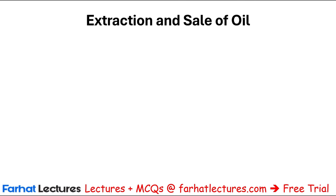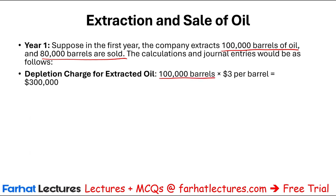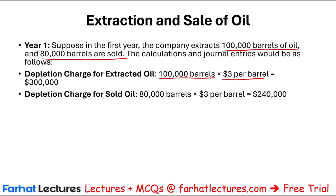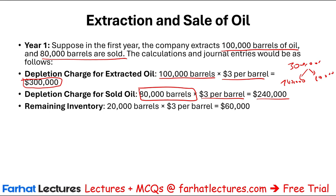In year one, we extracted 100,000 barrels of oil, of which 80,000 were sold. The total depletion on extracted oil is 100,000 × $3 = $300,000. The amount sold is 80,000 × $3 = $240,000. The remaining unsold inventory is 20,000 barrels × $3 = $60,000.